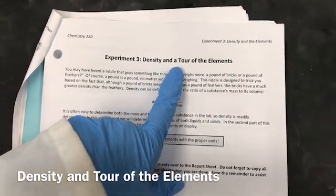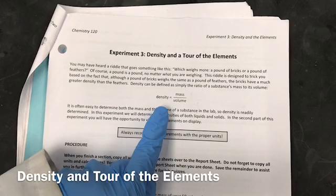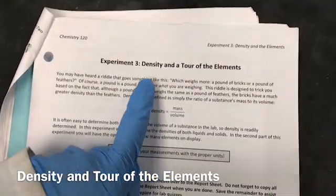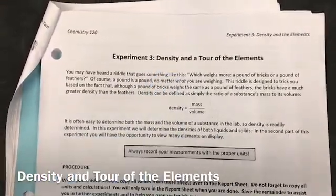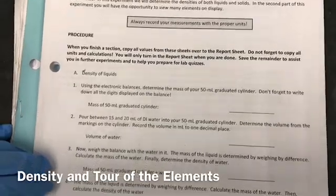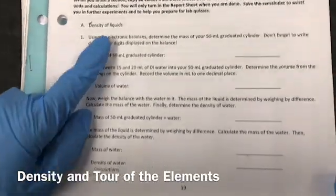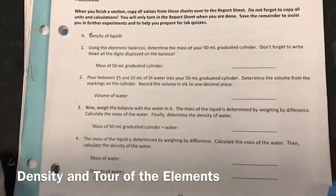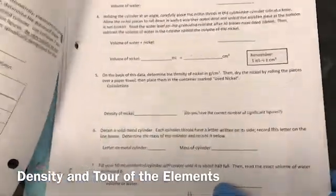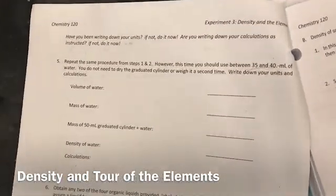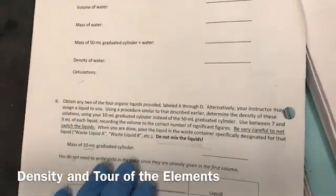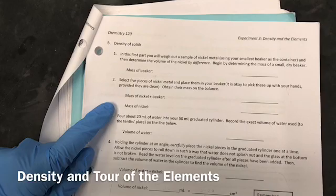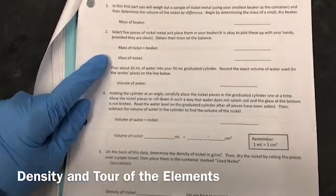Today's experiment is density and tour of elements. We already learned in lecture that density is mass divided by volume. The first part is density, and we are going to record the density of liquids and solids both. For liquids, we will first record the density of water, then the density of an organic liquid. For solids, we will record the density of nickel and a metal cylinder.